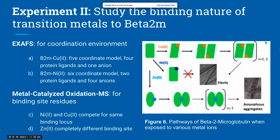Through the second experiment in the paper, they studied the binding nature of transition metals to beta-2-microglobulin. They used two techniques, the first being extended X-ray absorption fine structure (EXAFS). From this they found that the beta-2-microglobulin copper 2+ complex was a five-coordinate model with four protein ligands and one anion from the buffer. For the beta-2-microglobulin nickel 2+ complex, they found it was a six-coordinate model with two protein ligands and four anions.